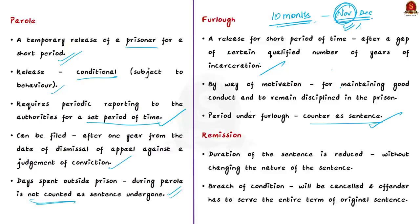In remission, the duration of the sentence itself is reduced without changing its nature. For example, if a person is sentenced to two years and receives a remission of one year, they only undergo one year of imprisonment and are then free in the eyes of the law. However, if the conditions of remission are breached, it is cancelled and the offender must serve the entire original term. In parole and furlough, there is no remission — the sentence is not reduced.